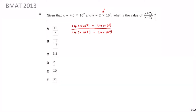To simplify, divide all terms by 10⁶. Then 4.6 × 10⁷ becomes 4.6 × 10, which is 46. The numerator becomes 46 + 14, and the denominator becomes 46 − 4. That gives 60 over 42, which simplifies to 30 over 21, then dividing by 3 gives 10 over 7. That maps onto answer A.